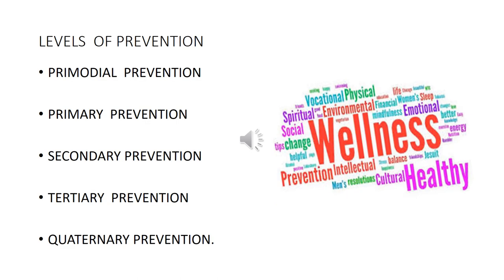Coming to the levels of prevention — in public health there are usually five levels of prevention, but in your course only the first four are required. The fifth level is not included in your course but I'll give a basic outline. The levels are: number one, primordial prevention; number two, primary prevention; number three, secondary prevention; number four, tertiary prevention; and number five, quaternary prevention.